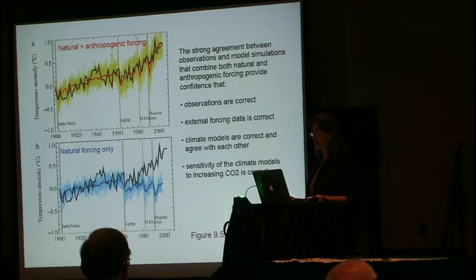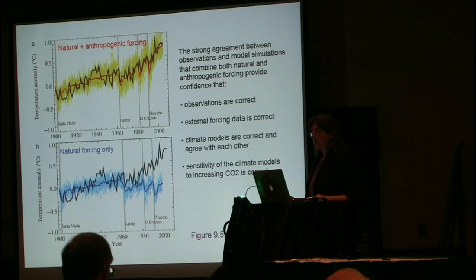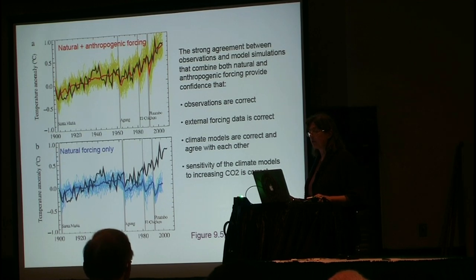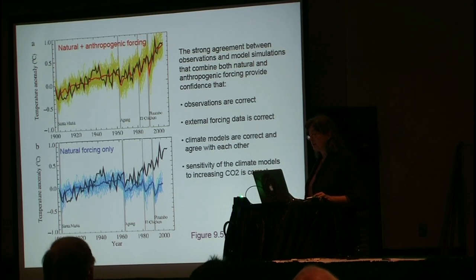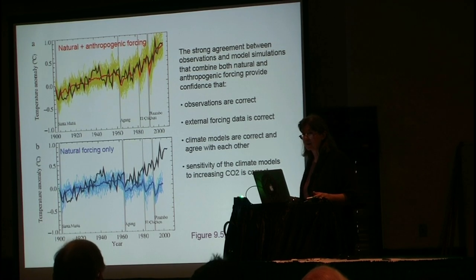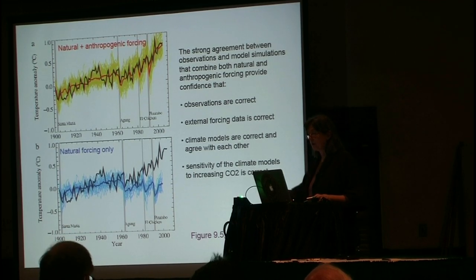When I first saw versions of this diagram as the early results were being published, I was very much struck by the agreement between the simulations with natural and anthropogenic forcing and the observed global temperature record. To me, the strong agreement between observations and model simulations provided confidence that the surface temperature observations had to be correct, the external forcing data had to be correct, the climate models had to be correct and agree with each other, and the sensitivity of the climate models to increasing CO2 had to be correct. If any one of these things was wrong, we wouldn't have got such agreement. It was this agreement between the observed and the simulations that really gave plausibility to all of these things regarding the capabilities of the models and our understanding of the forcings.